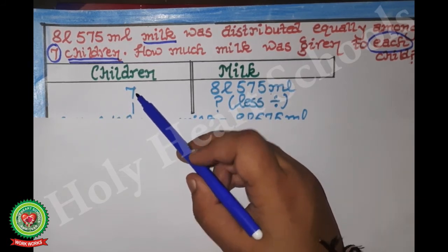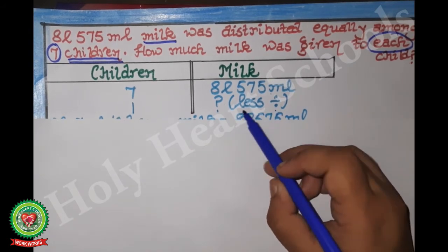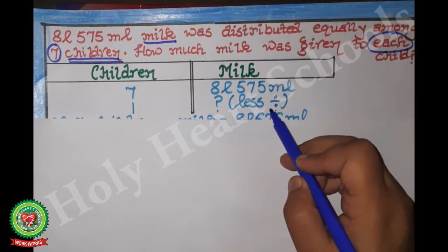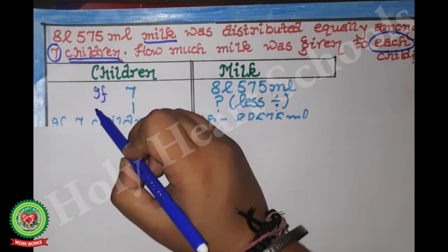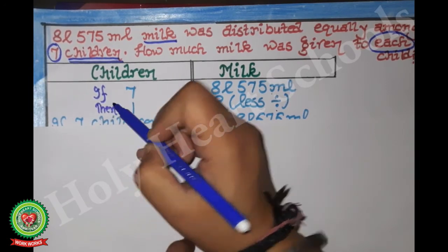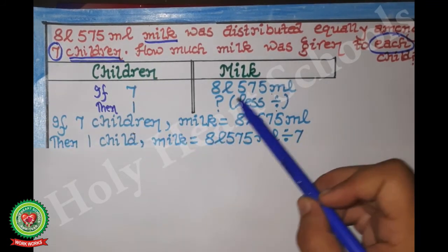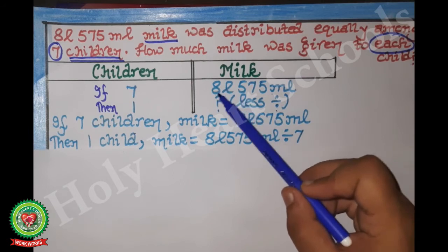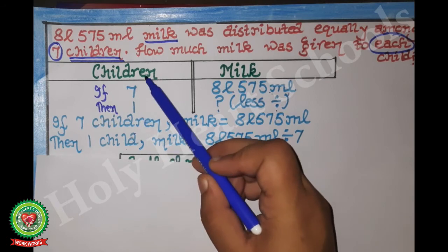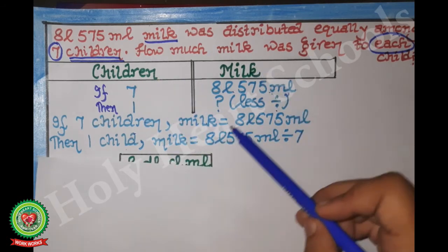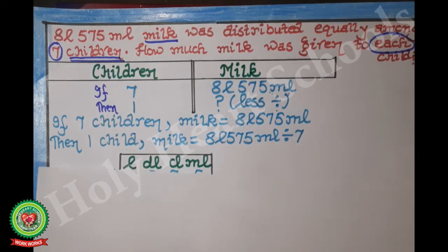One is less than seven, so we will do divide. First statement with 'if' and second with 'then'. If seven children milk is equal to 8 liters 575 milliliters, then one child milk is equal to 8 liters 575 milliliters divided by 7.